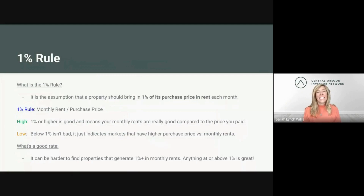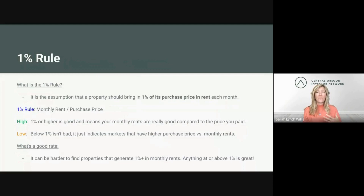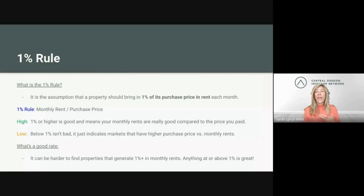Another quick and easy metric you can use is the 1% rule. The 1% rule is the assumption that the property should bring in 1% of its purchase price in rent each month. In some markets this isn't totally achievable, but there are certainly markets in the United States where it is, and where you can even sometimes get the 2% rule, which used to be the standard. The 1% rule is essentially monthly rents divided by purchase price. A result of 1% or higher is considered good and means your monthly rents are really solid compared to the price paid. A lower than 1% return isn't bad — it may just mean you're in a market with higher purchase prices versus monthly rents. Anything above 1% is great.